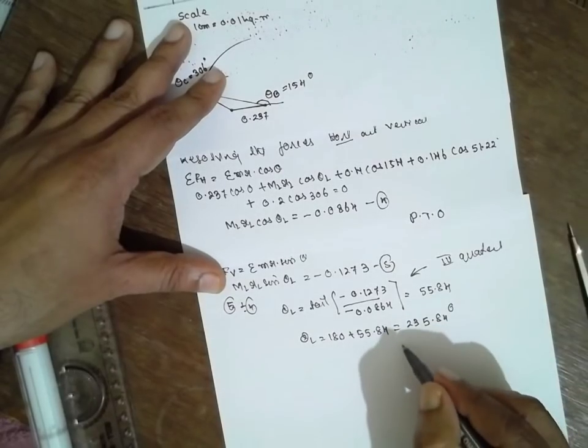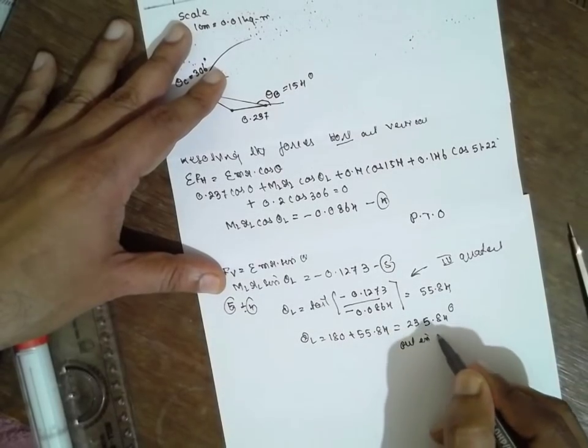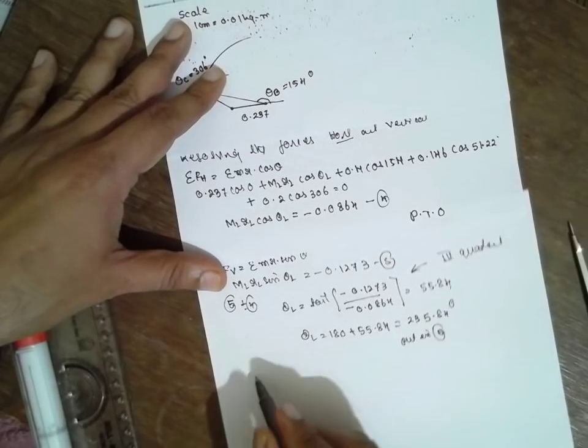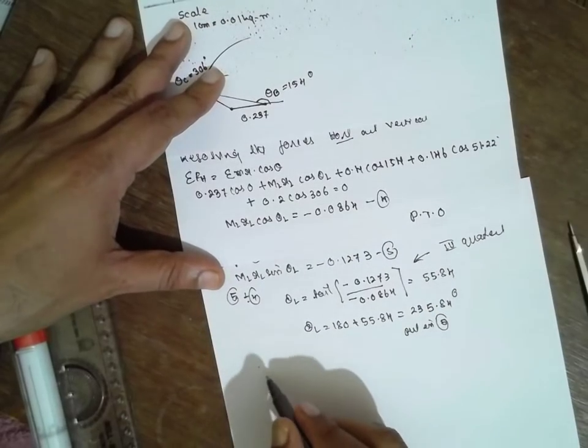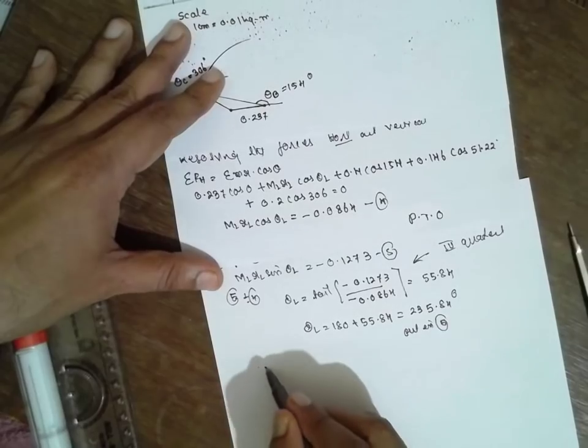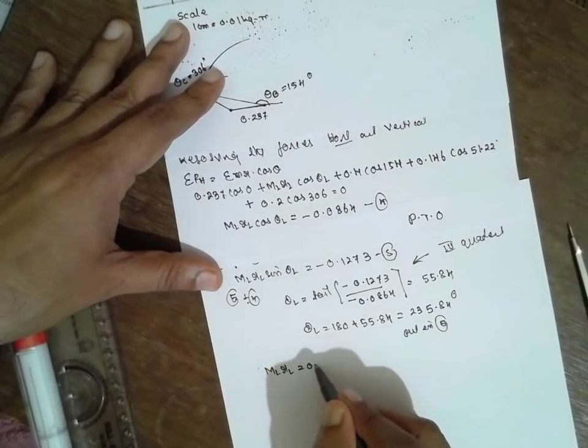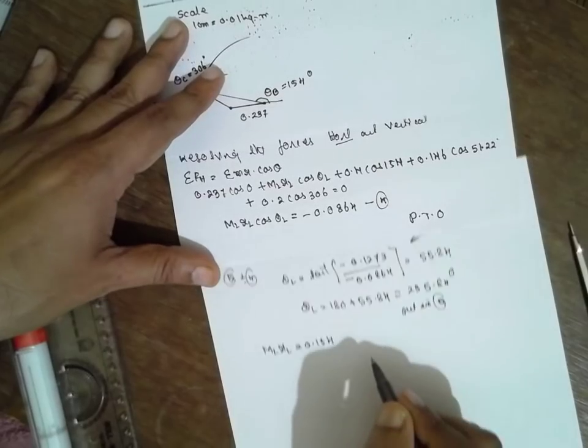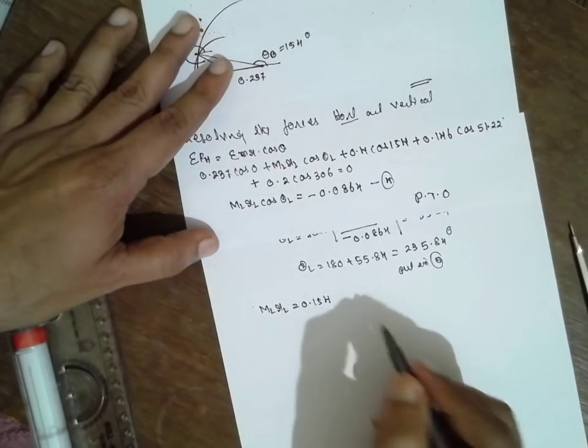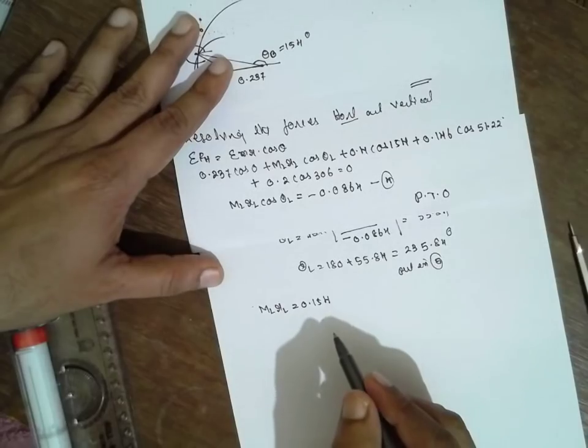If you put this value in equation 5, you will get ML RL equals 0.154.